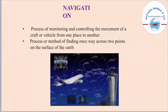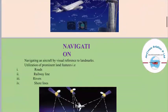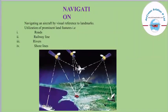So talking about navigation, first let us know what navigation basically is. Navigation can be defined as the process of monitoring and controlling the movement of a craft or vehicle from one place to another. In other words, it is a process or method of finding one's way across two points on the surface of the earth. Navigation is basically done by visual reference to landmarks, utilizing prominent land features such as roads, railway lines, rivers, as well as shorelines.